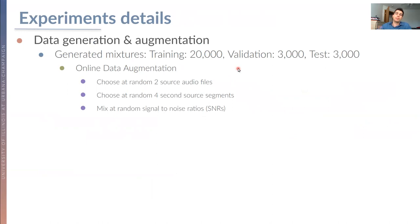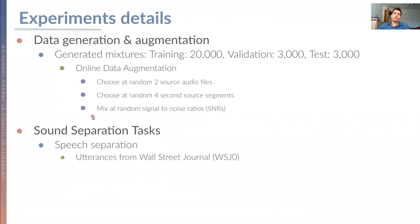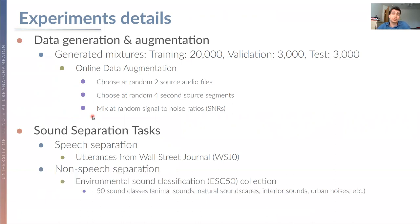For the experiments, we generated 20,000 training mixtures and 3,000 for validation and testing. We use an online data augmentation process where we choose two source audio files at random, chop four consecutive seconds from each, and mix them at random signal-to-noise ratios. We consider two different tasks: for the speech separation task we generate mixtures from utterances from the Wall Street Journal corpus, and for the non-speech separation task we use sources from the Environmental Sound Classification collection, which consists of 50 various sound classes.